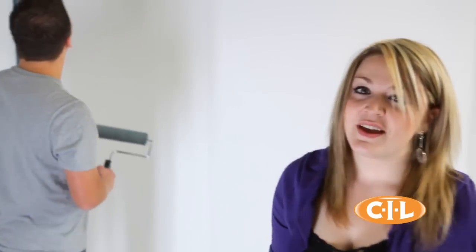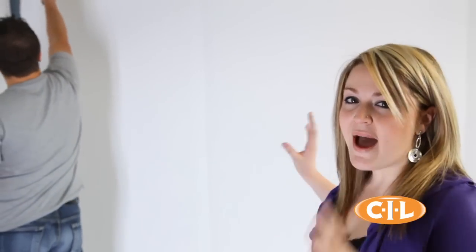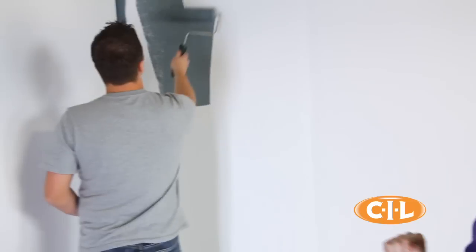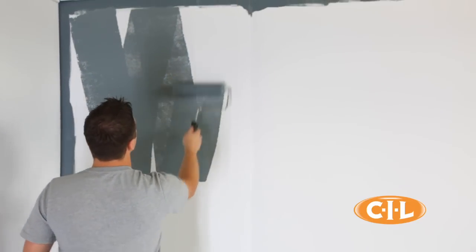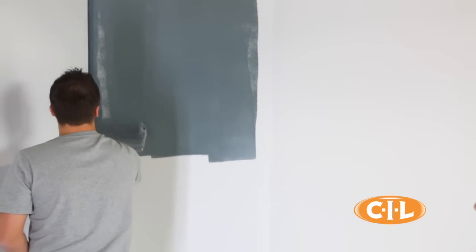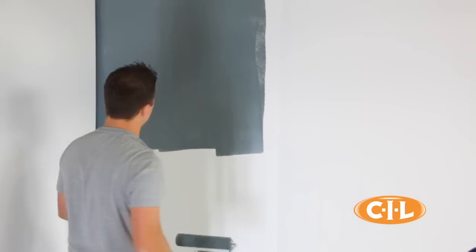Step two: take your roller and paint a massive W. And this is important—don't lift the roller before you fill the W in. Step three: then paint a W underneath the first one and fill it in. Then roll paint vertically over both.